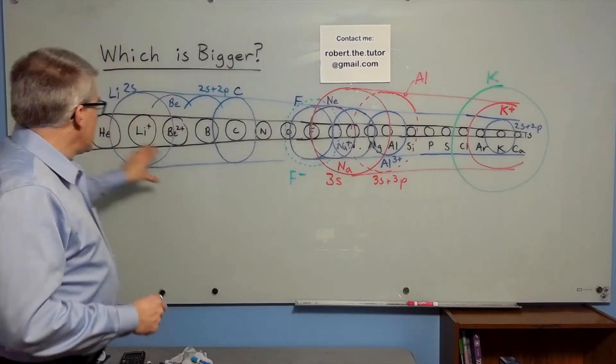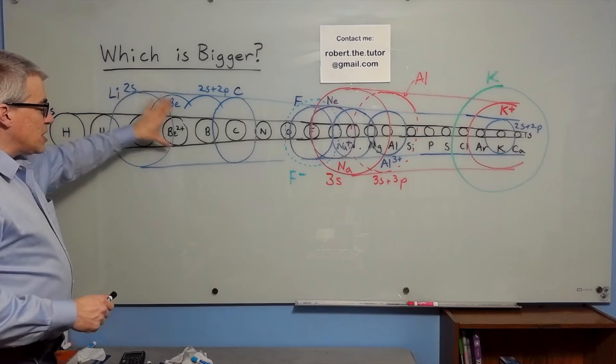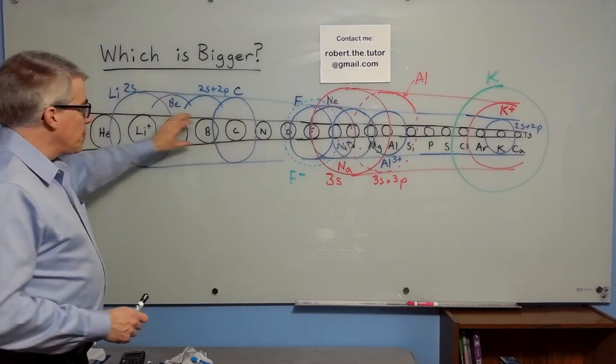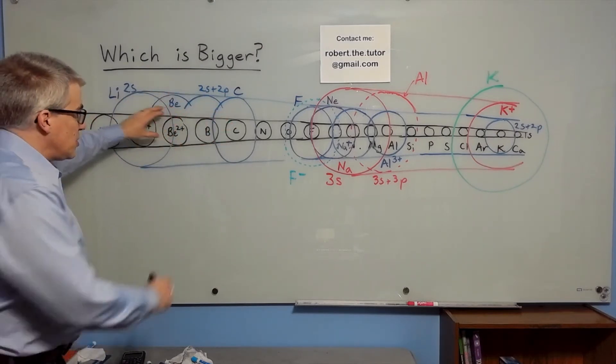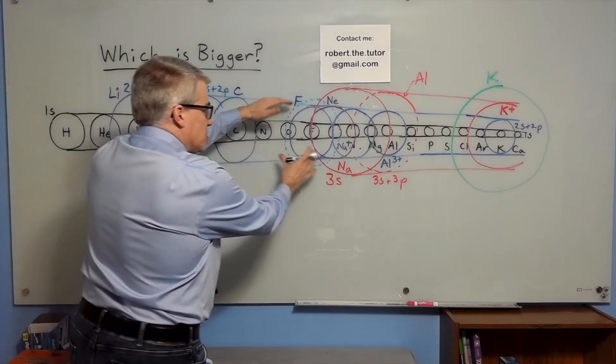Once you get to lithium, you have the 2s orbital. And as you move across, you start getting 2s and 2p. But likewise, you're getting more and more charge in the center, so they're getting smaller and smaller as you go.